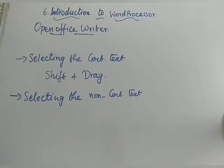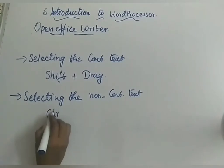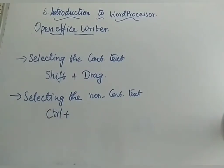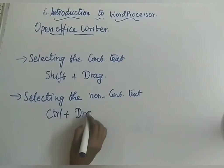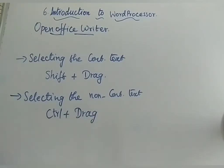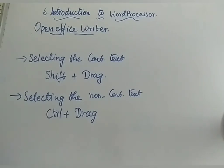To select non-continuous text, hold the Control key and drag across each line or paragraph you want. Press Ctrl and drag over the portions you need — this allows you to select multiple separate sections. So: Shift key for continuous selection, Control key for non-continuous selection.